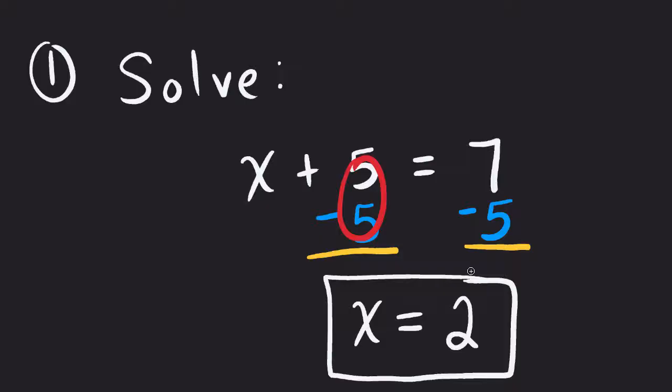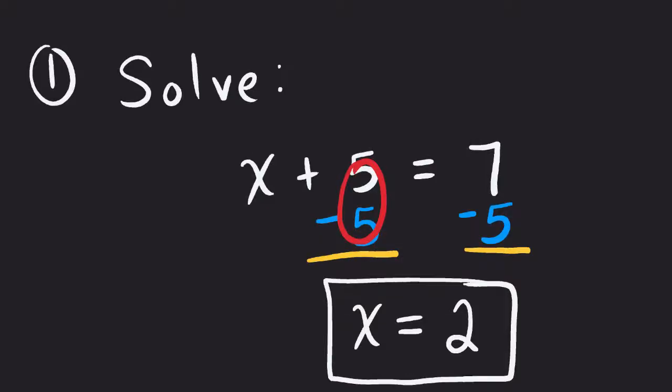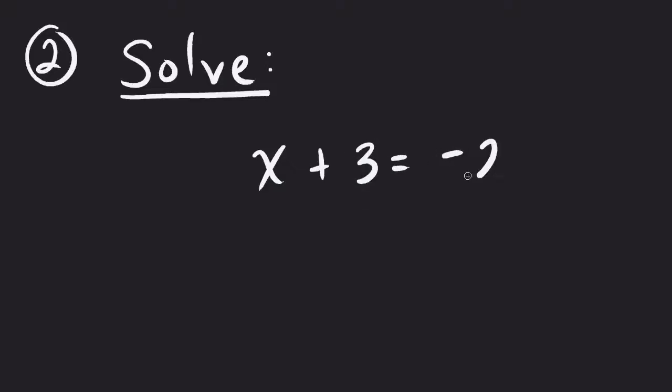Now, as we get more complicated, these problems will get more sophisticated and a little bit more complicated, but that's the general idea, is they'll give us something that says solve. They'll give us a problem where it says something like x plus 3 is equal to negative 2.